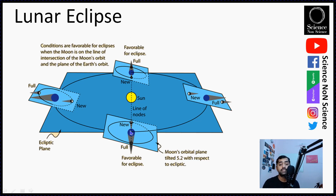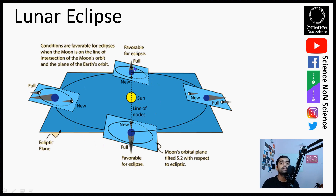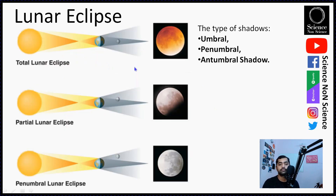Earth goes around the Sun every 365 days, or 12 months. Every six months there becomes a possibility of a lunar eclipse, and hence you might have also experienced that lunar eclipses repeat roughly every six months.